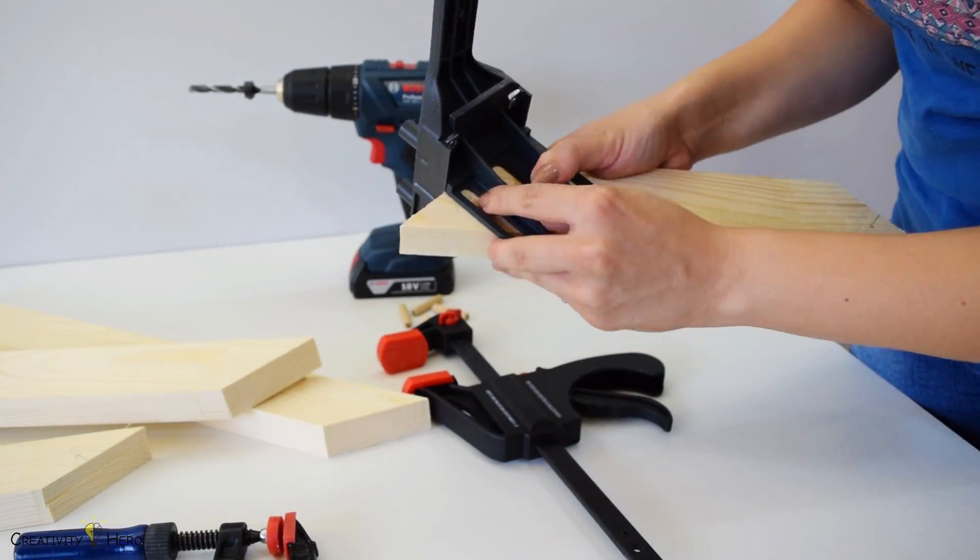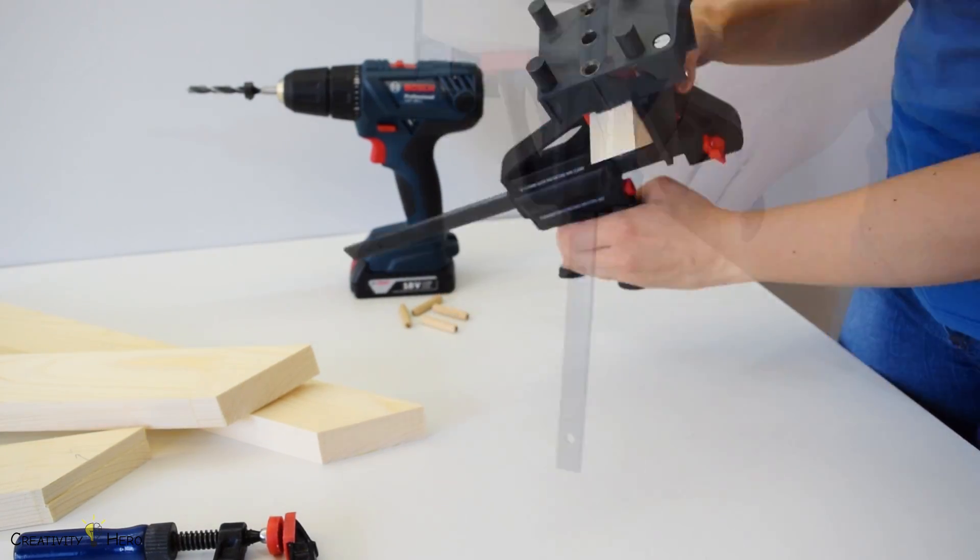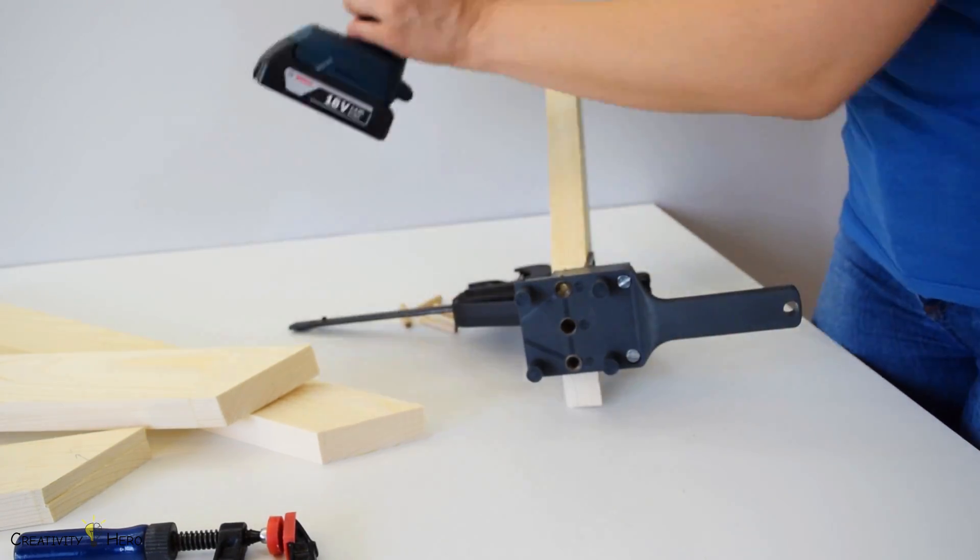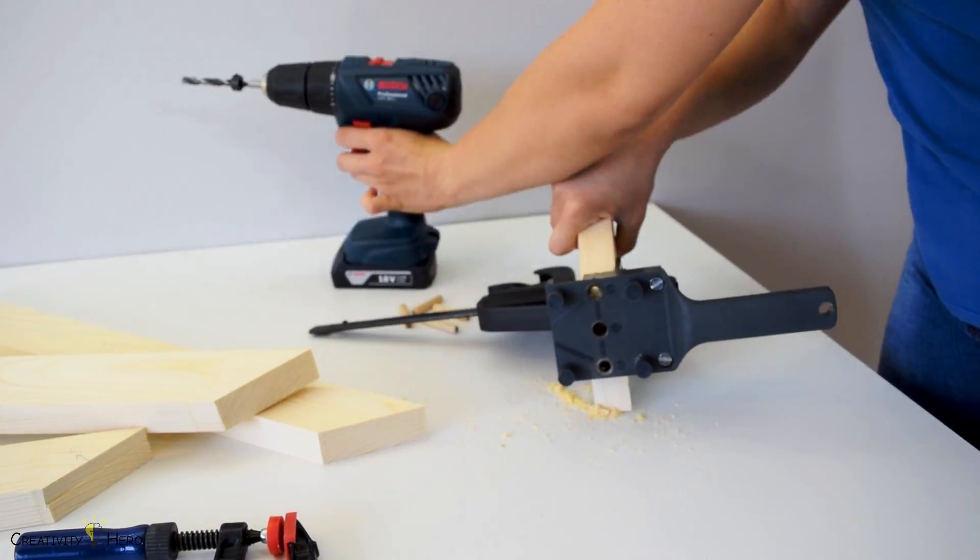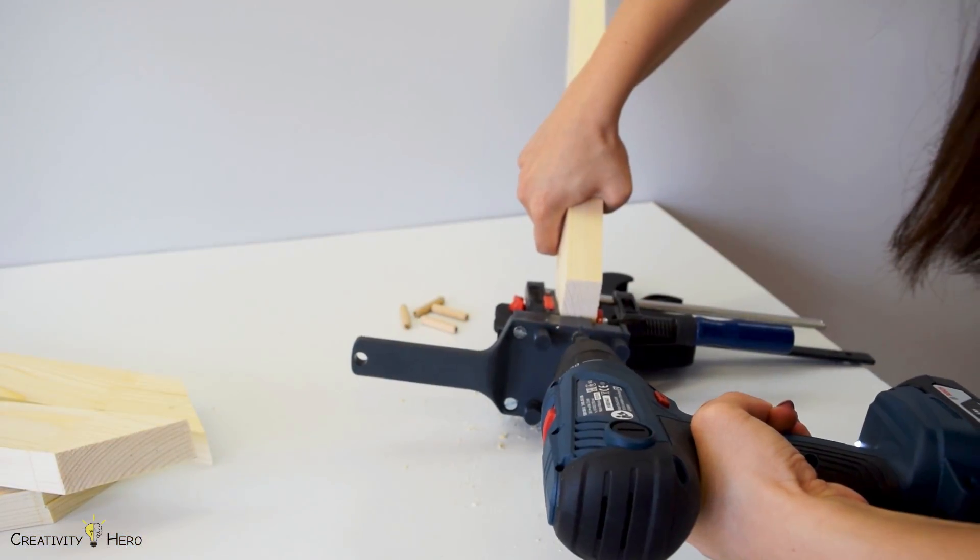To hold this entire frame together I'm going to use dowels. I've marked the connection points on each corner so that the dowels go through both pieces of wood. Then I drilled holes using a drill, a guide and some clamps for more precision.